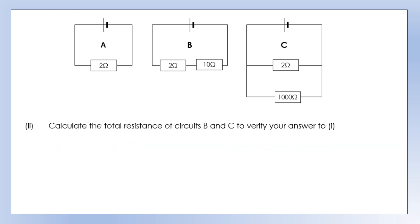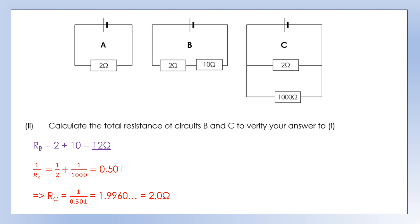Let's verify that by calculating the resistance of B and C. Circuit A is simply 2 ohms. For circuit B, they're in series, so we add them: 2 + 10 = 12 ohms, which is clearly bigger than 2. For circuit C, we use the reciprocal rule: 1/R_total = 1/2 + 1/1000, which is just over a half. Flipping that gives a resistance just under 2 ohms. So circuit C is lower resistance than A, though not by much since the 1,000 ohm resistor is very large.